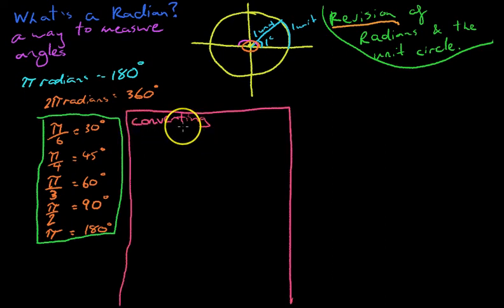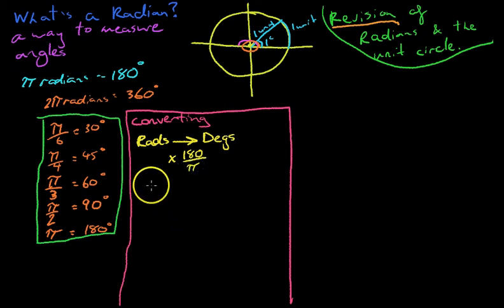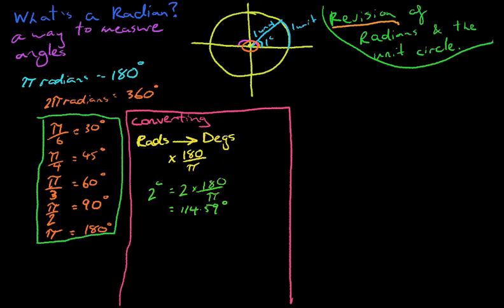A little thing here: if you want to convert from radians to degrees, multiply by 180 on pi. Quick example: if someone tells you there are 2 radians and you want to convert that to degrees, that's equal to 2 times 180 on pi, and that's going to be 114.59 degrees. So if you want to convert radians to degrees, multiply it by 180 on pi.